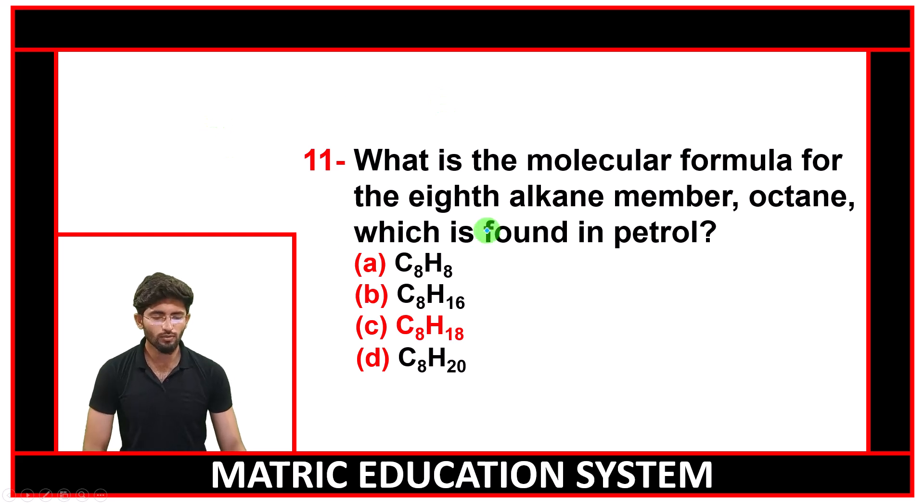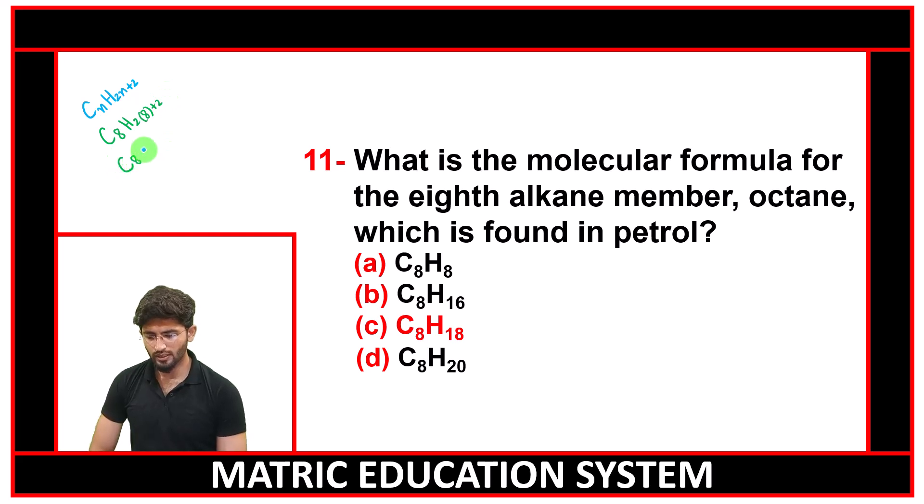What is the molecular formula for octane, the 8th alkane? This is CnH2n+2, the general formula for alkane. If I talk about alkane, then C8 means 8 times 2 is 16 plus 2 equals 18. So C8H18 is the correct option.